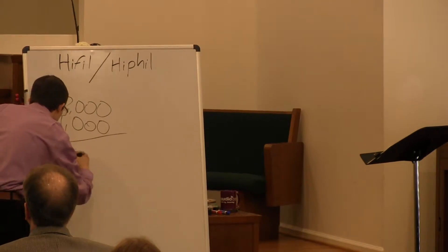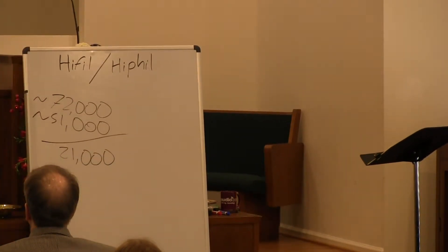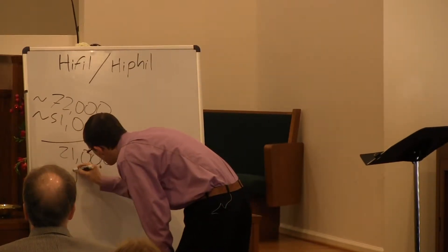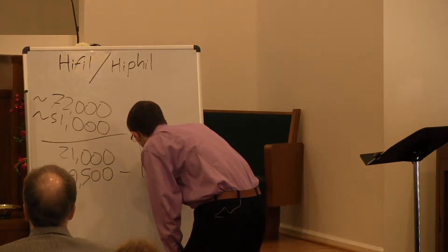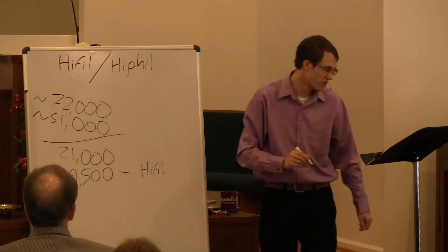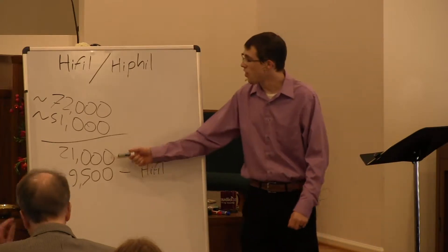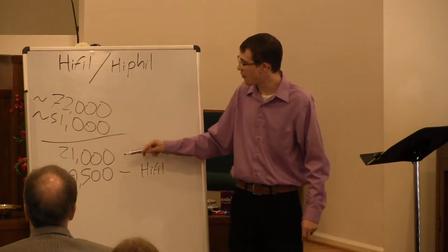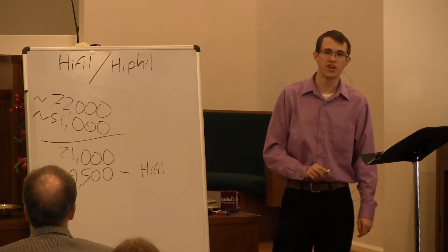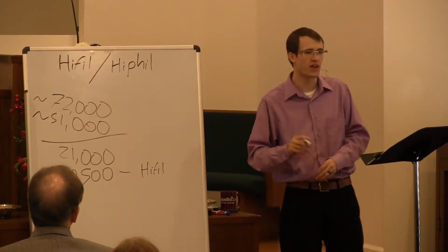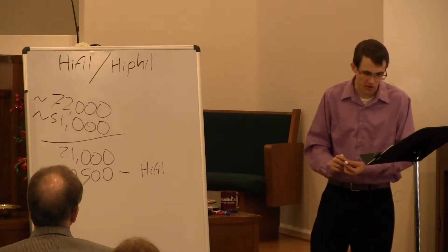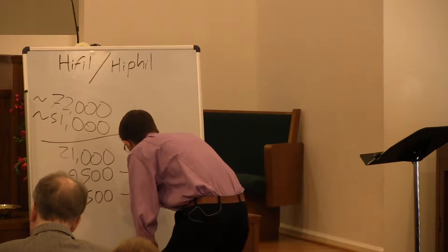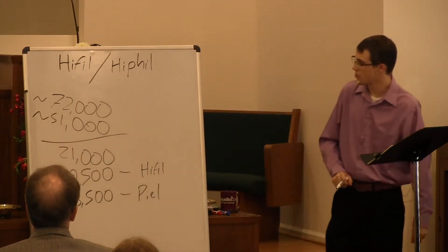That only leaves us with about 21,000 verbs. In the hiphil system, which we're going to consider today, we have approximately 9,496 verbs. So if you know the qal, you've got almost 70% of the verbs in the Hebrew Old Testament. Of the remaining 21,000, almost half are in the hiphil. I was wondering last night which is the second most used after the qal — is it the hiphil or the piel? The piel is used almost 6,473 times, so not quite as much as the hiphil, but still quite a lot.